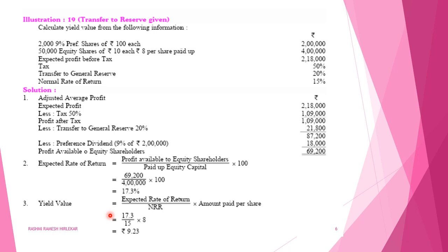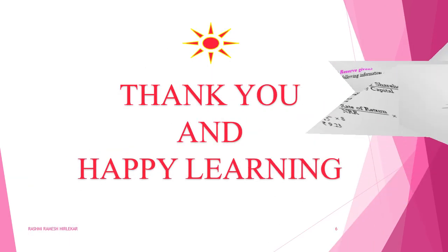For the yield value method, calculate the expected rate of return using the formula: profit available to equity shareholders divided by paid-up equity capital, multiplied by 100. Profit available to equity shareholders is Rs.69,200; paid-up capital is Rs.4 lakh. Expected rate of return = 17.3%. Yield value = expected rate of return divided by normal rate of return, multiplied by paid-up value per share. Shares are partly paid at Rs.8 per share paid-up, giving a yield value of approximately Rs.9.23 per share.